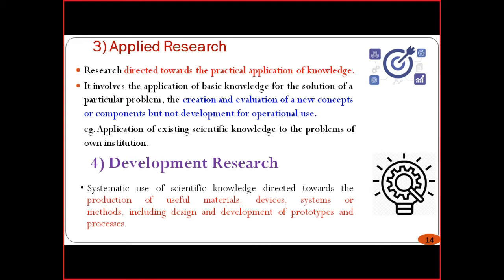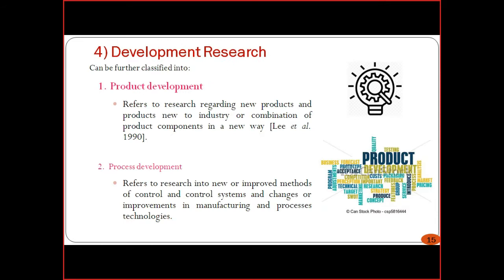The fourth type is development research — knowledge directed toward the production of useful materials, devices, systems, or methods, including the design and development of prototypes and processes. Development has two aspects: product development and process development. At the end of research, some new product may emerge that helps industry, or some processes or methods may be developed that can be used for further development.